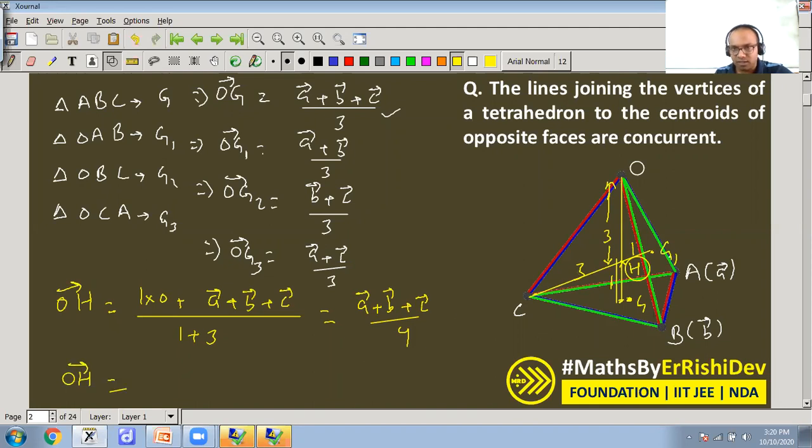3 times of G1 - how much was it? This was this. 3 times of G1 - what was it? a plus b. Plus 1 times of c. How much was it? Position vector of c was this, point c. Divide by what? 3 plus 1 or 1 plus 3.